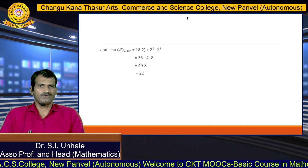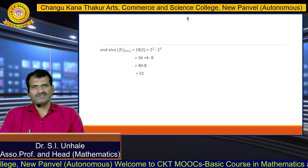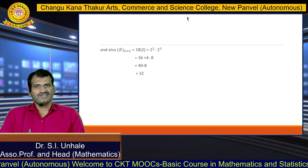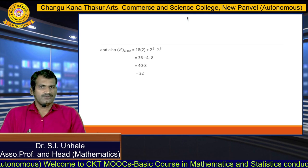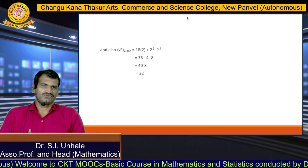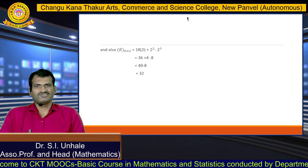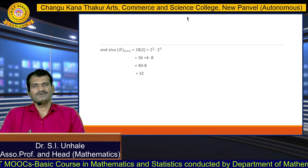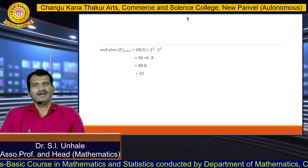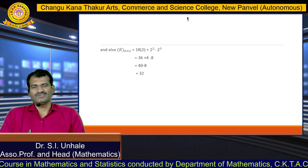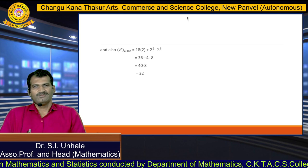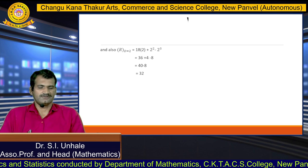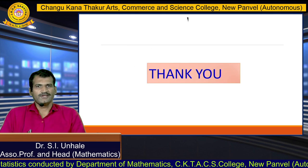Similarly, we can try another demand function. If instead of p equals 18 plus d minus d², another demand function is given, we can find the total revenue function in a similar way, and calculate it for demand of 2 units, 3 units, 4 units, and so on. Thank you so much.